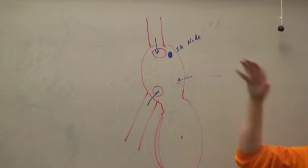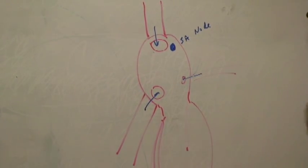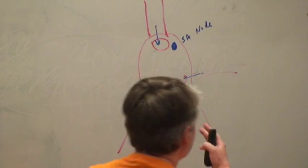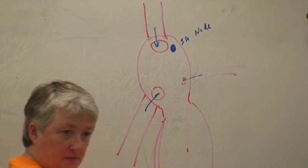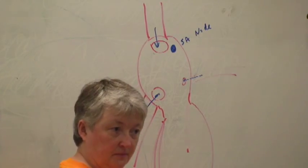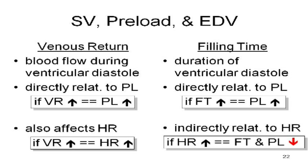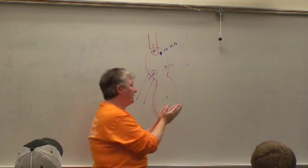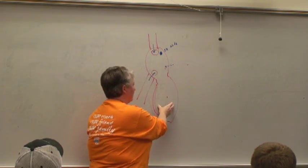Filling time is how long you're allowing the ventricle to stay relaxed so that blood flows in — the longer it stays relaxed, the more blood flows in. The problem is, the faster your heart is beating, the less time it has to fill. So we talk about maxing out your heart rate — you can't keep going up to infinity. At some point your heart is beating so fast that it's actually pumping less blood each time because the fill time is shorter. The faster the heart beats, the fewer milliseconds you have for the ventricle to fill.